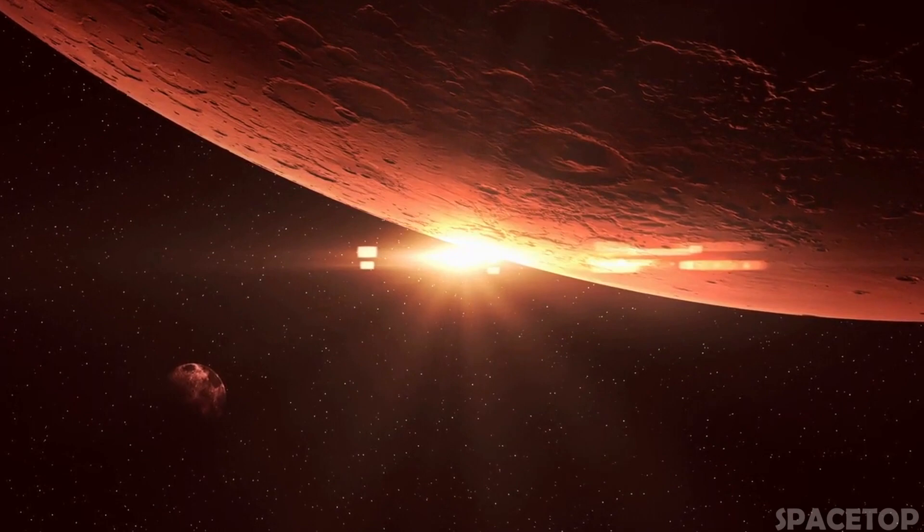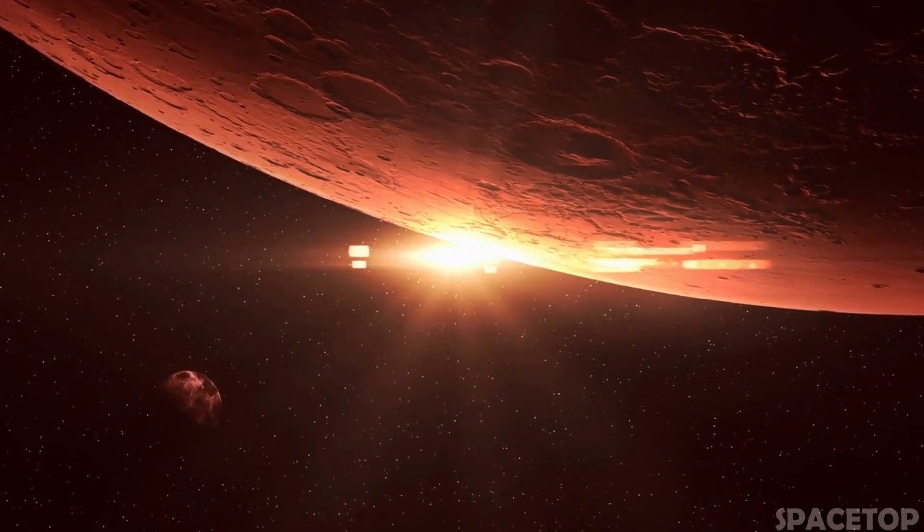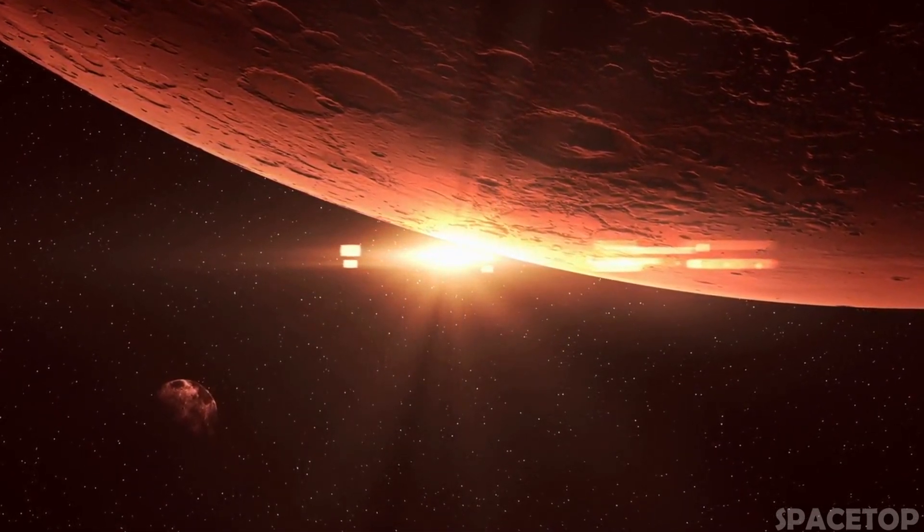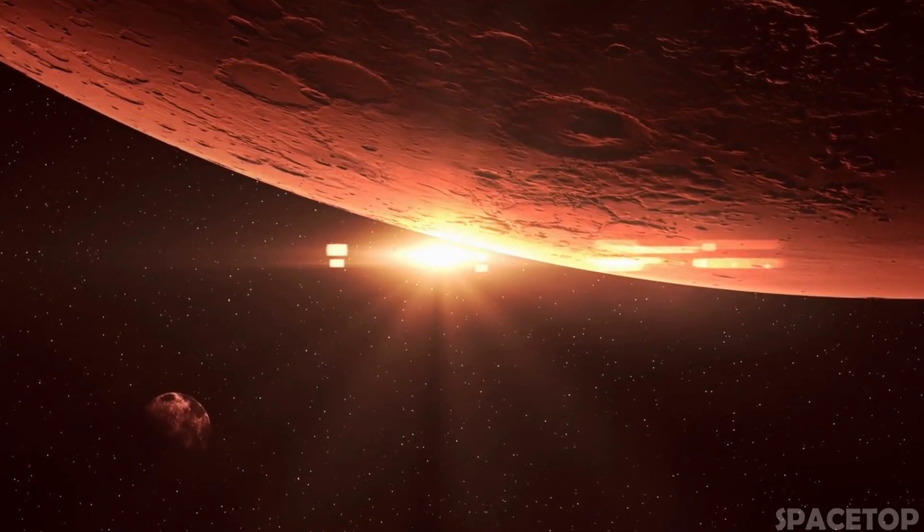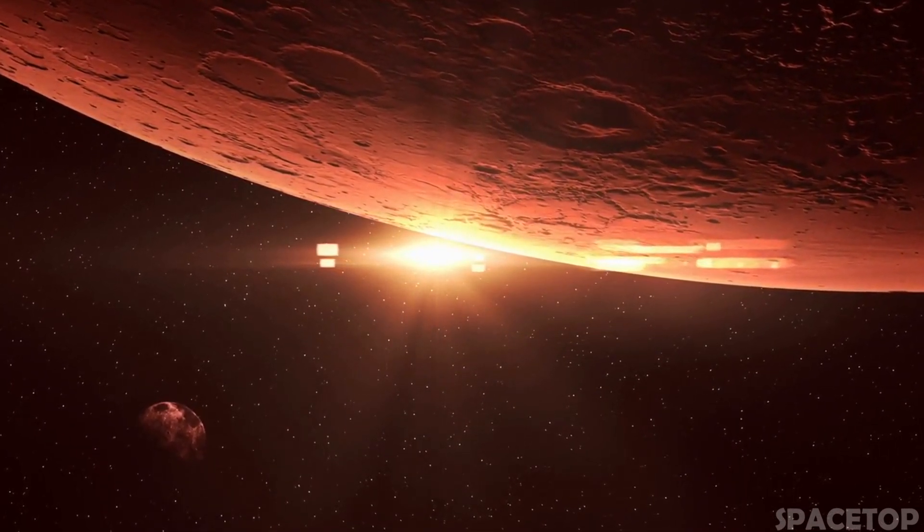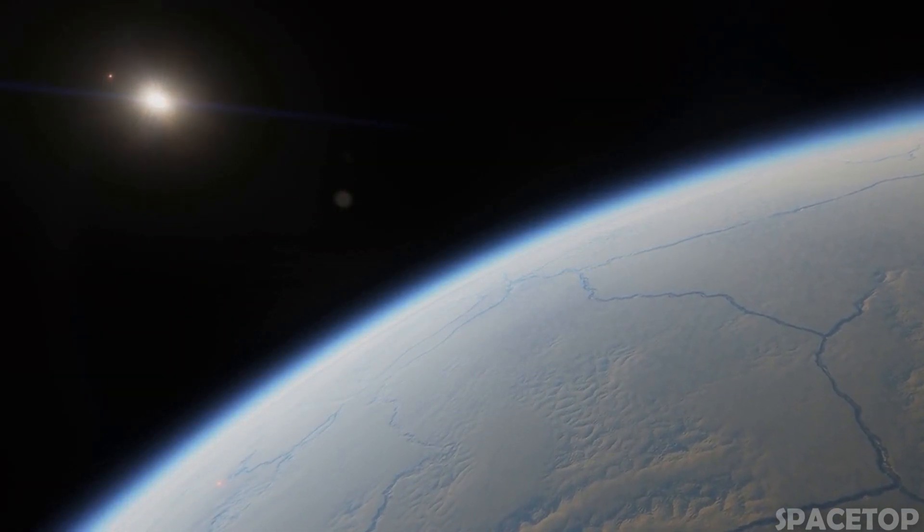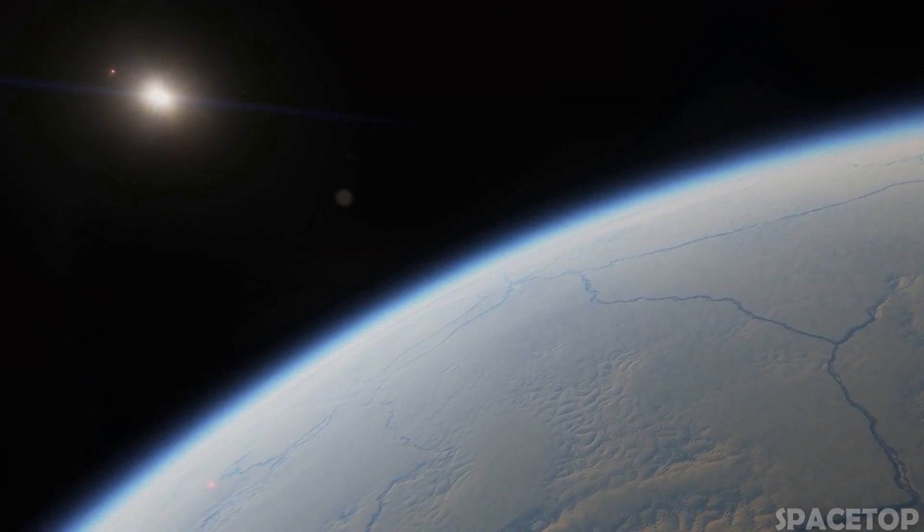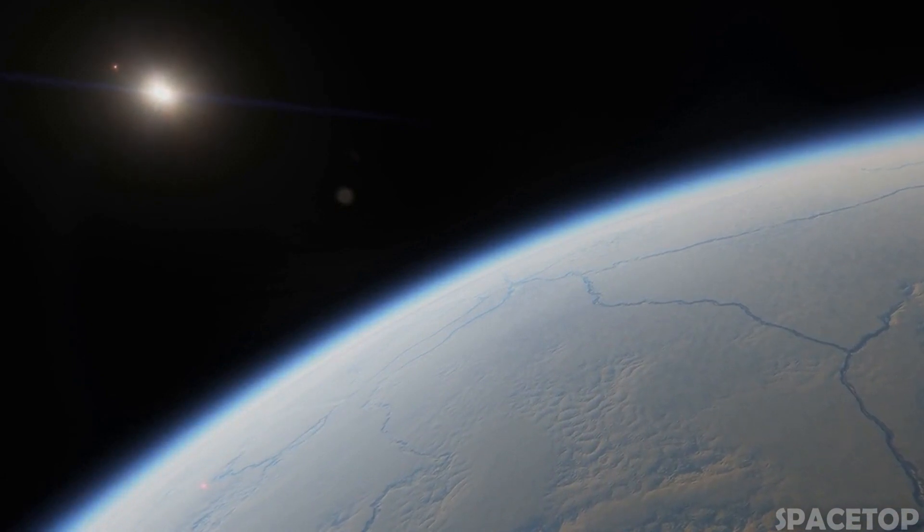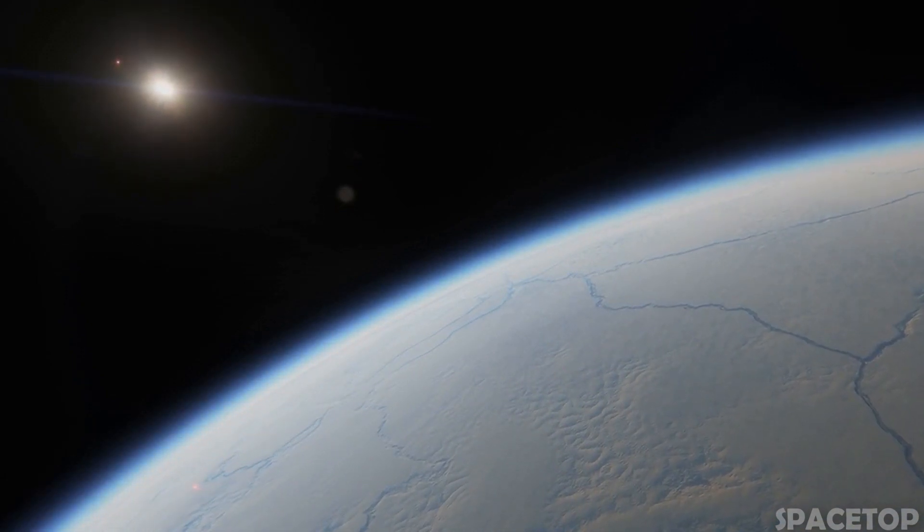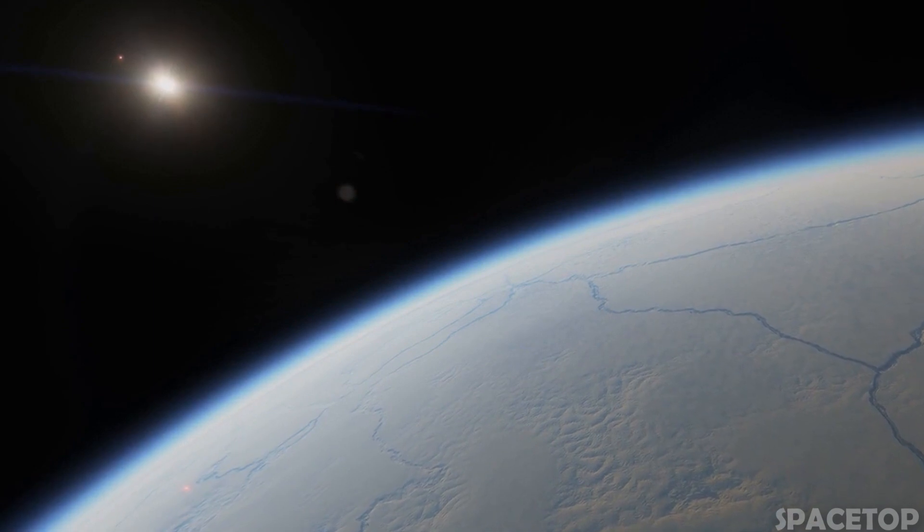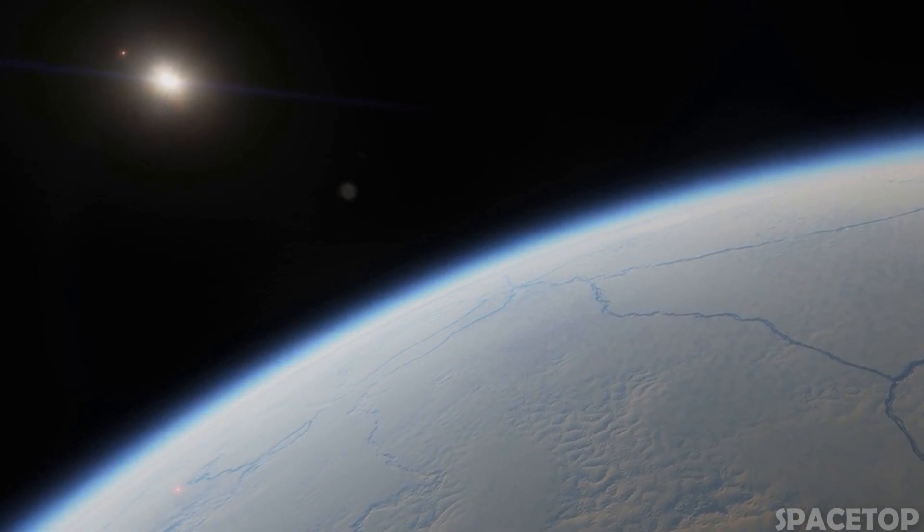Later observations showed that the planet orbits its star at a distance of a trillion kilometers. This is about 7000 times the distance from our planet to the Sun. This makes it the largest orbital radius of all the planets known to date. Interestingly, the result of such a huge orbit is that a year on this exoplanet is about 200,000 Earth years.